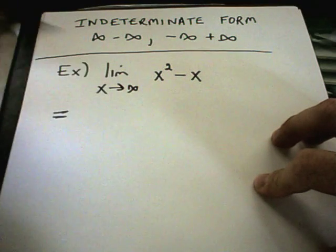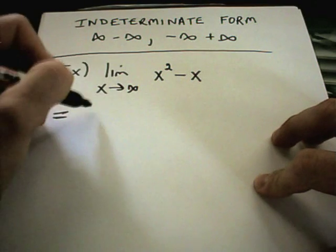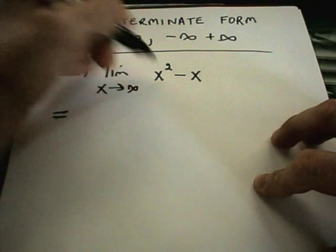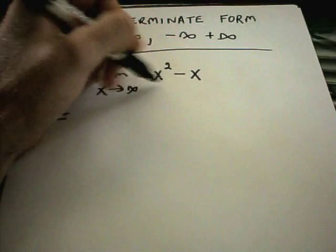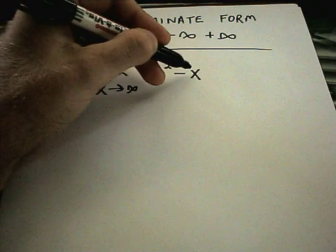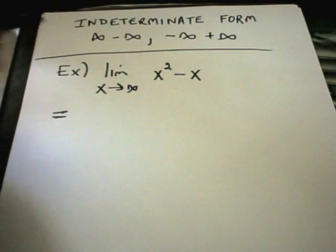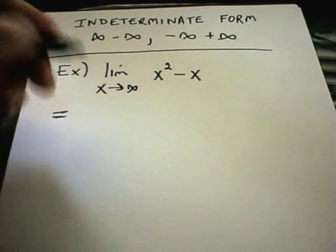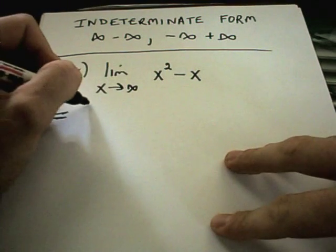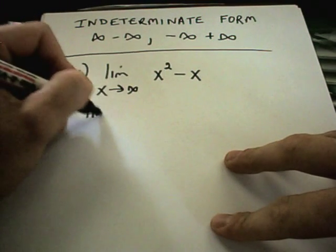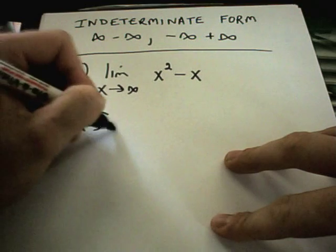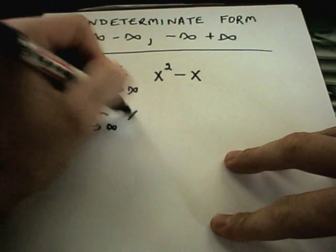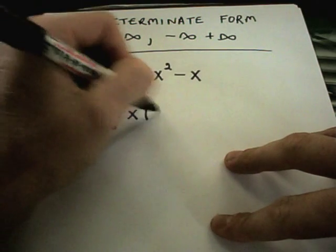In this case, the limit as x goes to infinity of x squared minus x. Intuitively, x squared is getting much bigger and much faster than x, so it seems like this should still go off to infinity. And kind of an easy way to justify that is by factoring out an x.